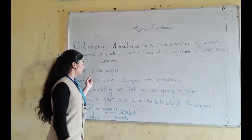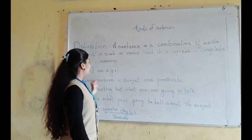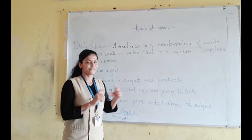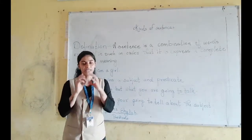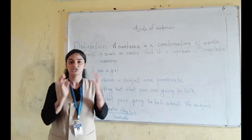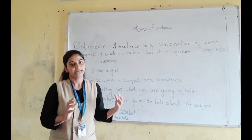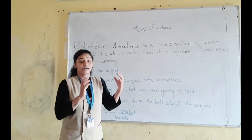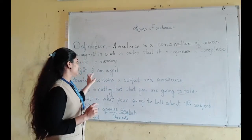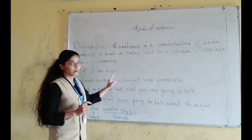You can see here an example: I am a girl. All these different words are arranged in such a manner, in such a sequence, that we can read a complete sentence — that is, I am a girl.